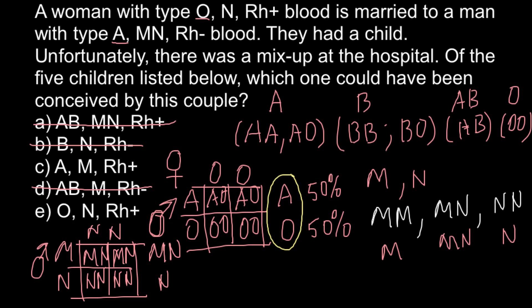In answer C, we have phenotype M, and in answer E we have phenotype N. Since we can only get MN or N blood groups from these parents, phenotype M is an incorrect answer because we don't have that possibility. So we can exclude answer C as well, and what we are left with is answer E.